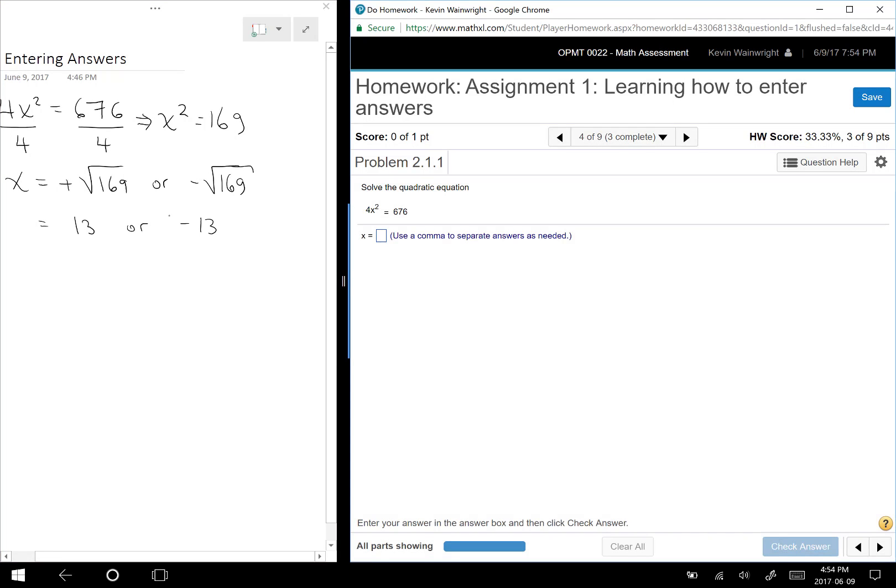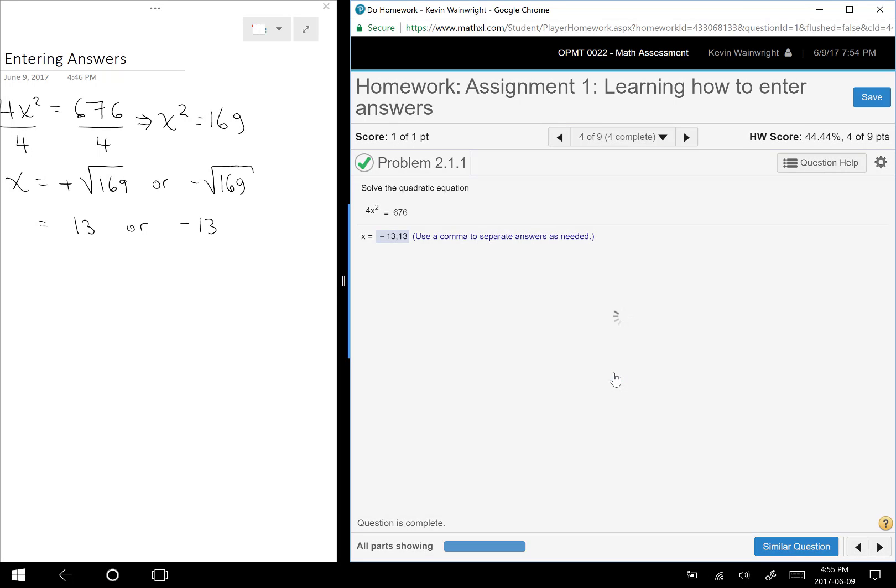Now, going back to the MyMathLab, how do you enter that? You have to separate your two answers with the comma. I'm going to put in the lowest one first, the negative 13, comma, positive 13, and check my answer. Well done, move on to the next one here.